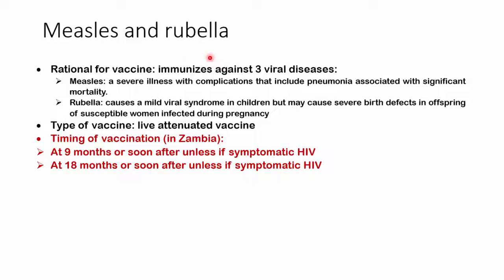With measles and rubella, this vaccine is given against two diseases — we no longer give against mumps. Measles is a severe illness that can complicate into pneumonia with significant associated mortality. Rubella can cause mild viral symptoms and disease in children and pregnant women. This is a live attenuated vaccine given at nine months and at 18 months — only two doses. If the child is symptomatic with HIV, we do not give the vaccine.